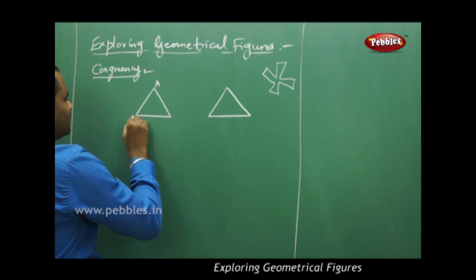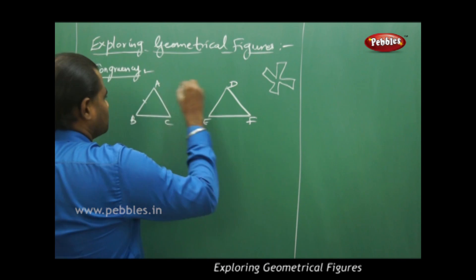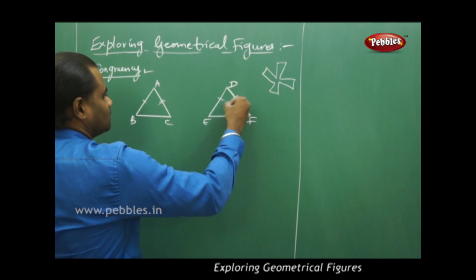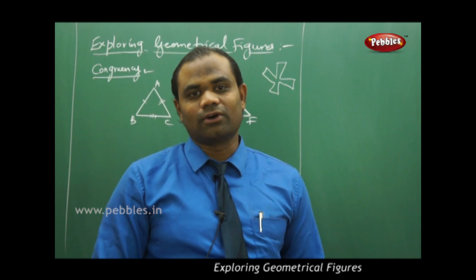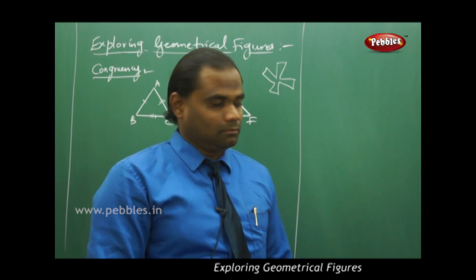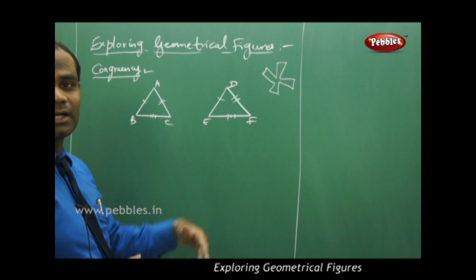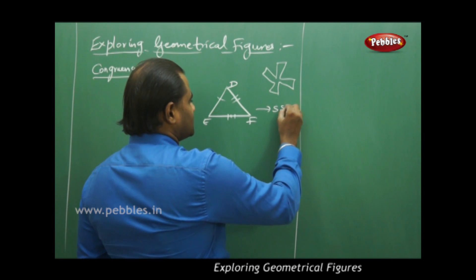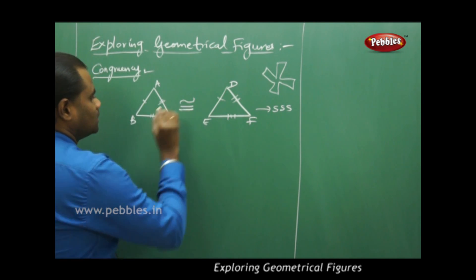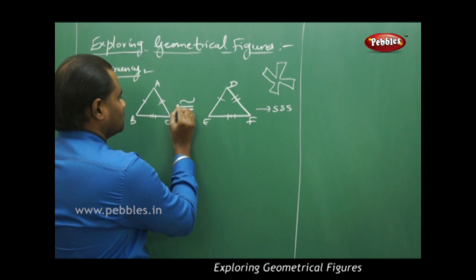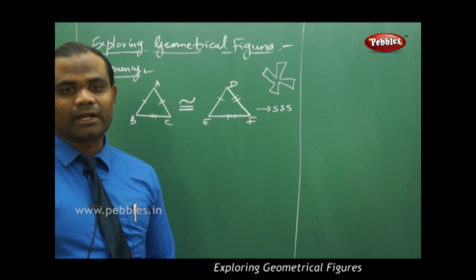Triangle ABC is said to be congruent to triangle DEF if the corresponding sides are equal. This is one way through which congruence is identified for a triangle — two triangles are said to be congruent if their corresponding sides are equal, which is called SSS congruency. The congruency is denoted with the symbol of two equalities and one cross line.